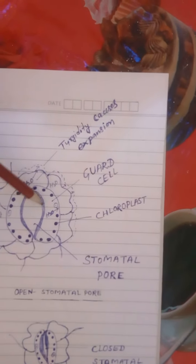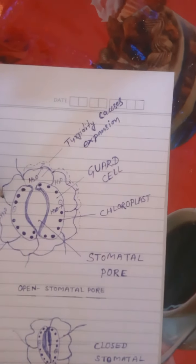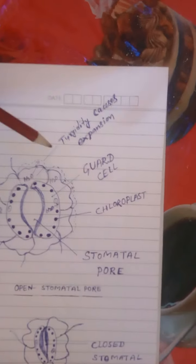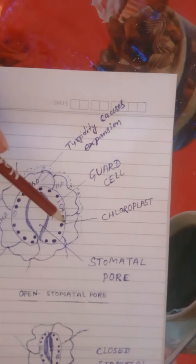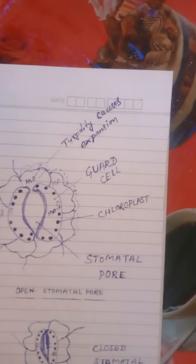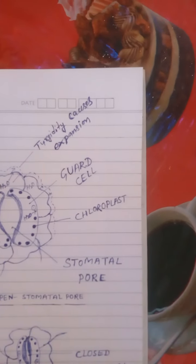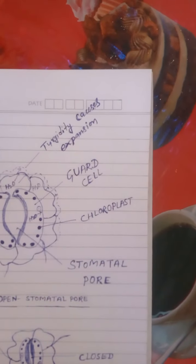These two are guard cells, and these guard cells are surrounded by subsidiary cells, as you can see here. These are surrounded by subsidiary cells.